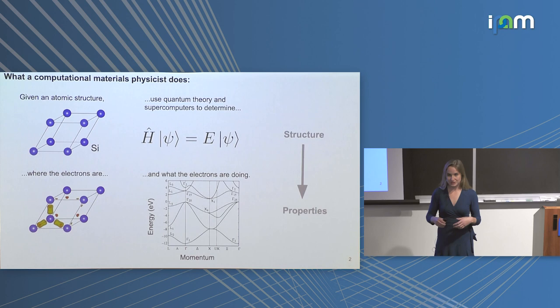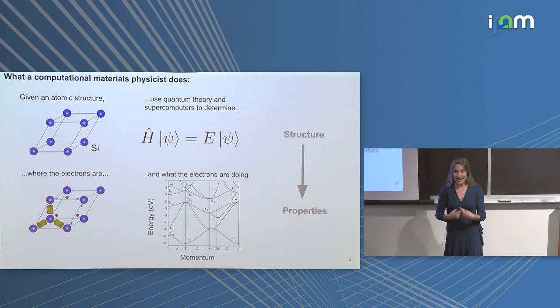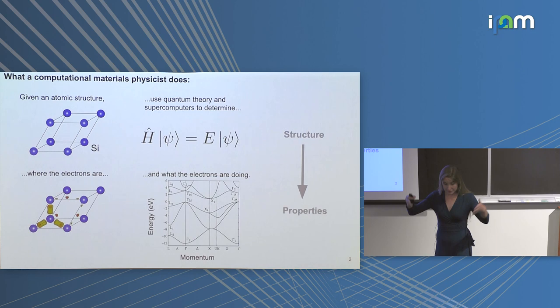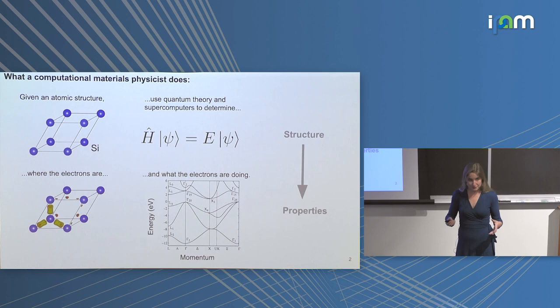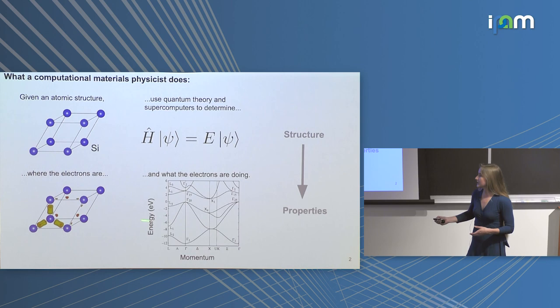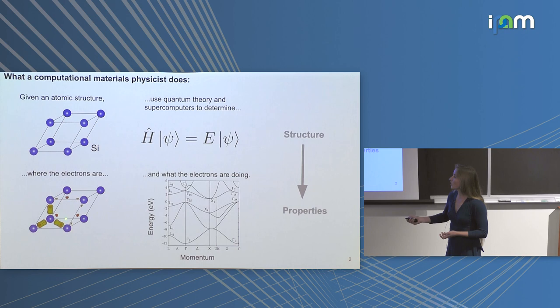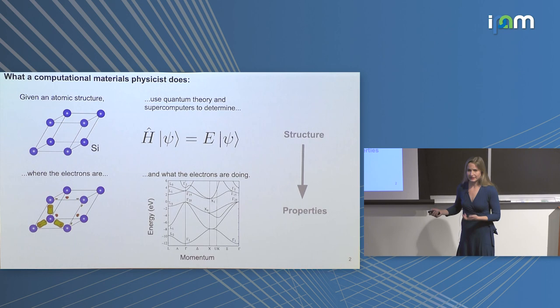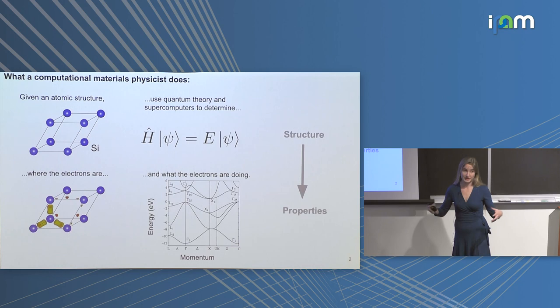My background is that I'm a computational materials physicist. What that means is that if you give me an atomic structure — in this case silicon, this is the crystal structure of silicon — I would use quantum theory and supercomputers to determine where the electrons are and what they're doing. This is a charge density map of where the electrons are in silicon. They happen to be right in between all the silicon atoms because silicon is covalently bonded.